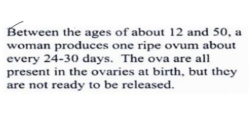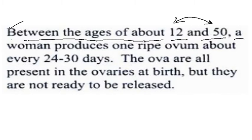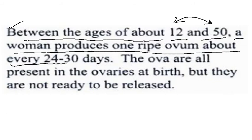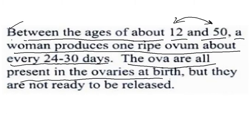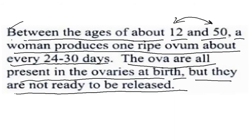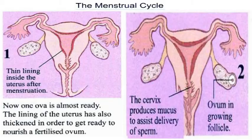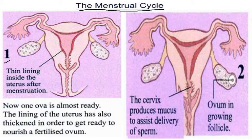Between the age of about 12 and 50, a woman produces one ripe ovum about every 24 to 30 days. The ova are all present in the ovaries at birth but they are not ready to be released. The structure of the cyclic menstruation is given here. First step: thin lining inside the uterus after menstruation — shown by red/dark red color in the uterus.